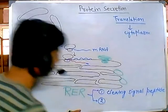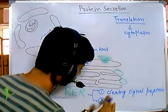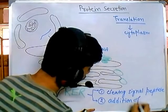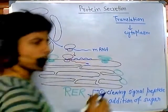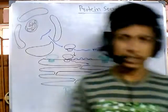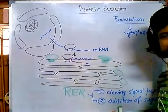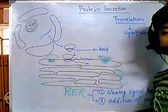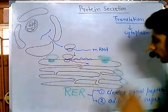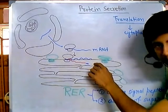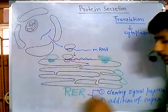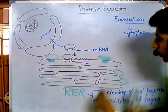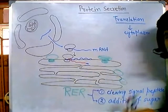The second thing inside the RER lumen is the addition of sugar. Some sugar compounds are added to the proteins — more or less all secretory proteins have some kind of sugar variation. After the addition of sugar, the third thing occurs, which is the most crucial: protein folding. Protein folding also occurs in the RER lumen. So we have sequential stages: cleaving of the signal peptide, then addition of sugar, then protein folding. Once protein folding is completed, proteins are headed towards the golgi apparatus.